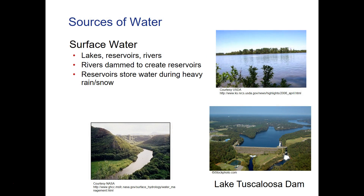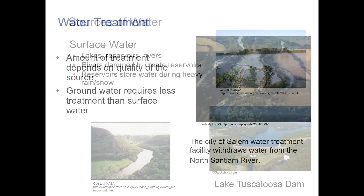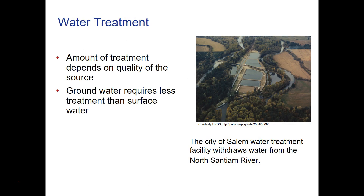You can also get water right off the surface from a lake, reservoir, or river. Rivers can be dammed to create reservoirs, and reservoirs can be man-made on a property or farmland to store water during heavy rain or snow. Water treatment depends on the amount and quality of the source. Groundwater usually requires less treatment because it's already been filtered by the earth.